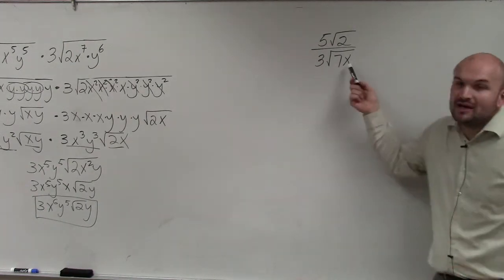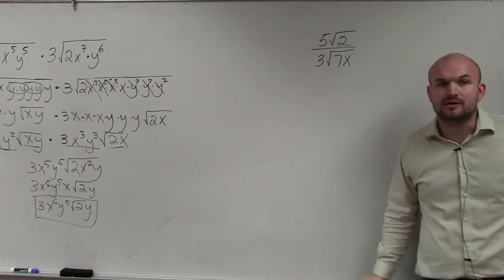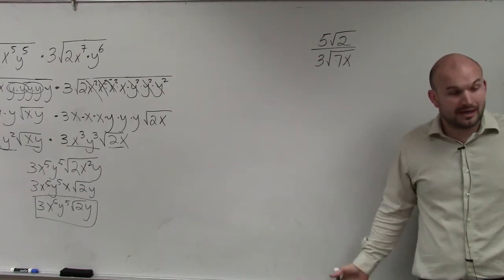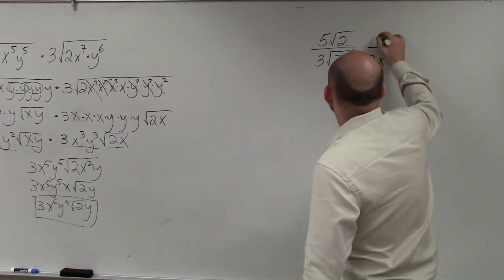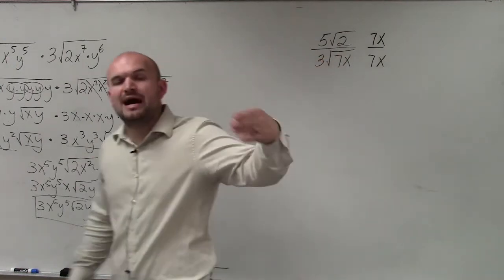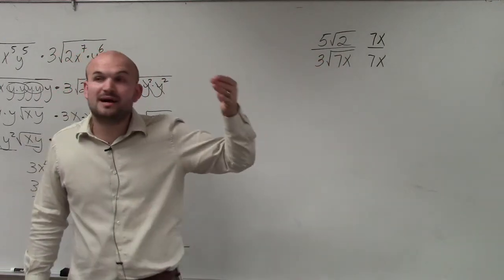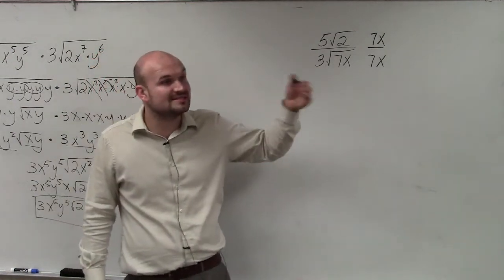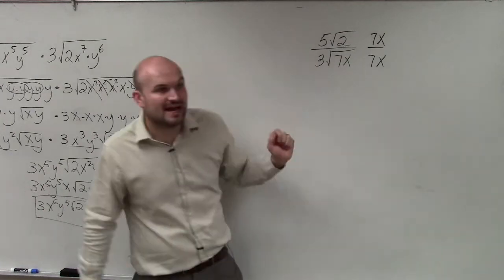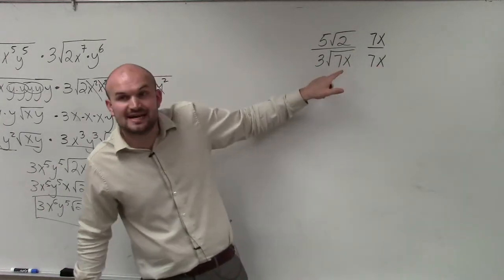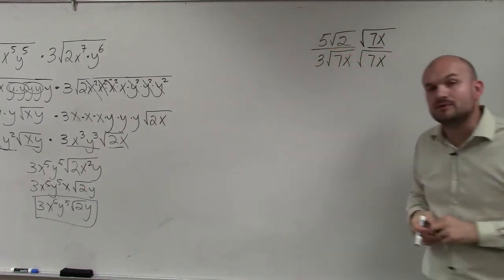So what do I need to multiply 7x by to get it to be 7 squared x squared? I need to multiply it by 7x. Now, the problem is, ladies and gentlemen, can we multiply a number outside of a radical inside of a radical? No, we cannot. Can we multiply numbers inside of a radical times numbers inside of a radical? Yes. So I can't multiply by 7x because I can't multiply 7x inside the 7x. But what I can do is multiply by the square root of 7x.